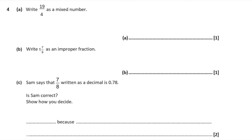Question 4, part A. Write 19 over 4 as a mixed number. 4 goes into 19 four times remainder 3. So the big number is 4, the remainder 3 is the numerator, and the denominator stays as 4 — that gives four and three quarters. Part B says write one and seven ninths as an improper fraction. Multiply one by nine to get nine, then add seven to get 16. So that's 16 over nine.